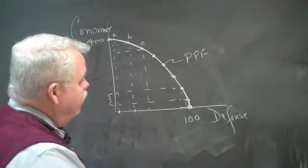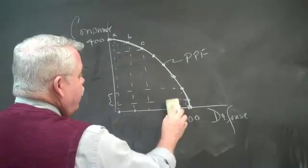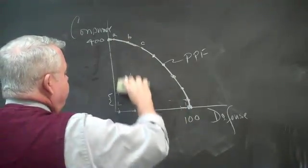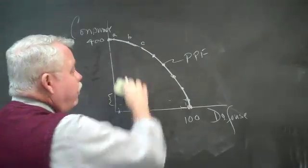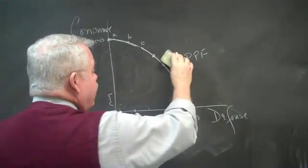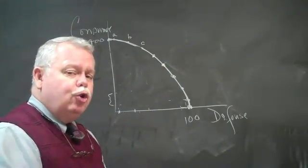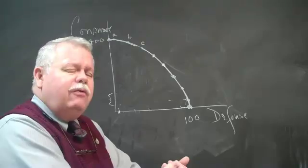But the point remains, theoretically, you can locate anywhere you want along that production possibilities frontier, but it's a possibilities frontier. It is possible to operate out here. It is possible to operate out here if you allocate your goods and use them efficiently.